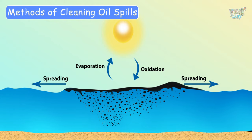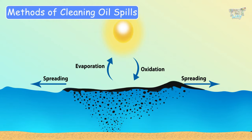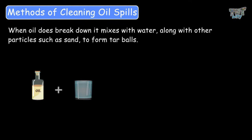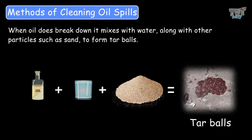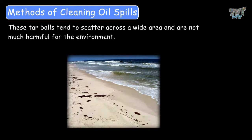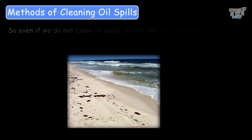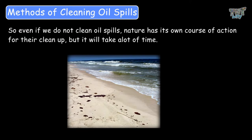Lighter oils will disperse faster than heavier ones. When oil does break down, it mixes with the water along with other particles such as sand to form tarballs. These tarballs tend to scatter across a wide area and they are not very harmful for the environment. So even if we do not clean up oil spills, nature has its own course of action.